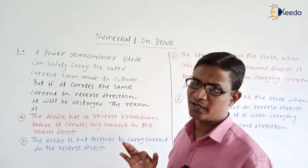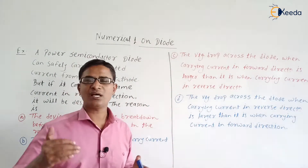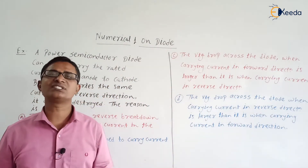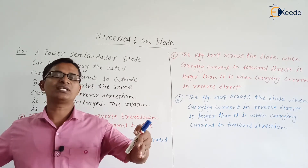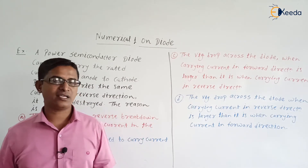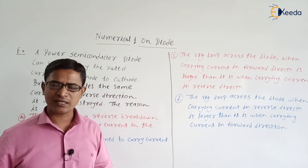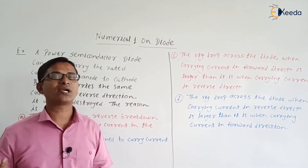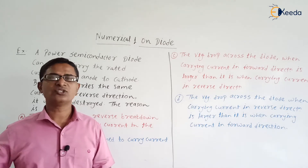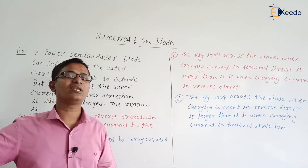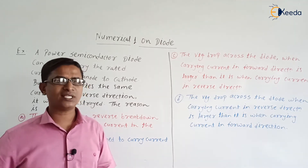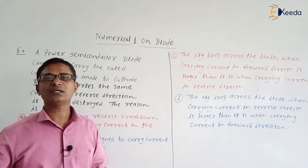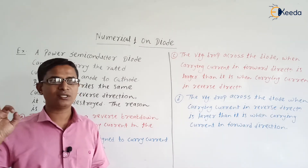The reason is, when the rated current flows in the reverse direction, the voltage across the diode will be very high. So high voltage and high current means there will be high power loss in the diode. This high power loss causes high heat generation, and due to that high heat generation, our diode will be destroyed permanently.